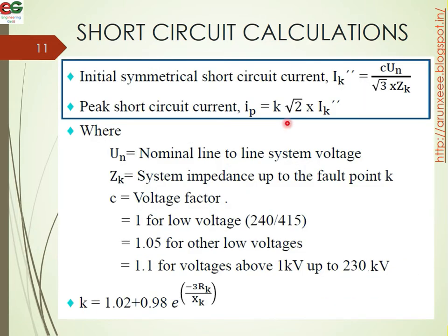The initial symmetrical short circuit current IK double dash equals C multiplied by UN divided by root 3 multiplied by ZK.